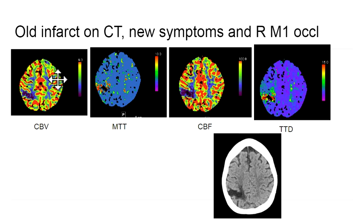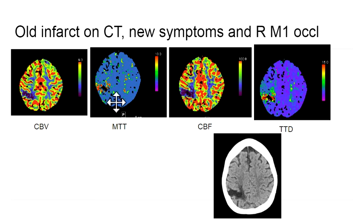If you don't have the CT, an old infarct looks like a completed infarct — you can't tell the difference between old and acute infarct on perfusion alone, so you need CT to age them.